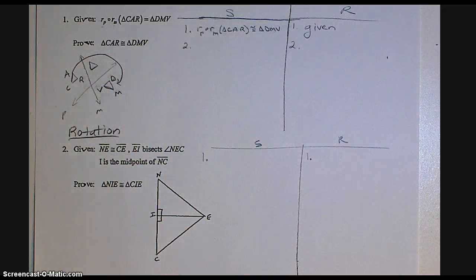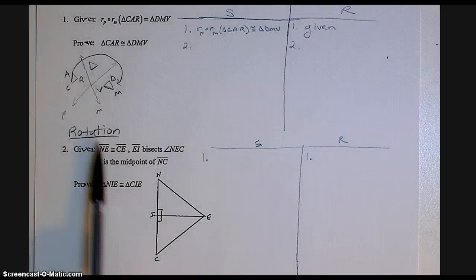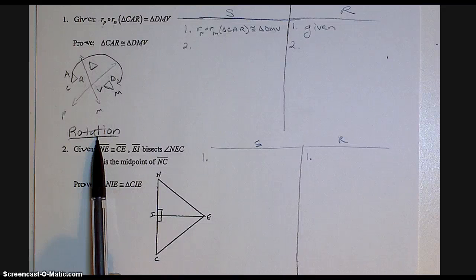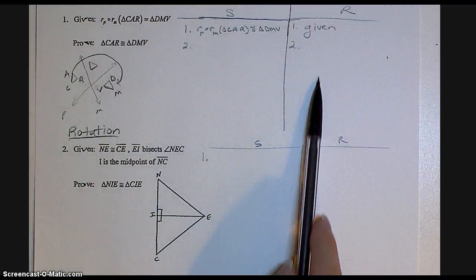Whenever we have a composite of reflections over intersecting lines, then we have a rotation. It's important to identify this so that you know what to put in your reasons column.